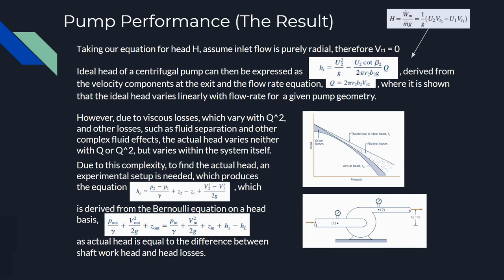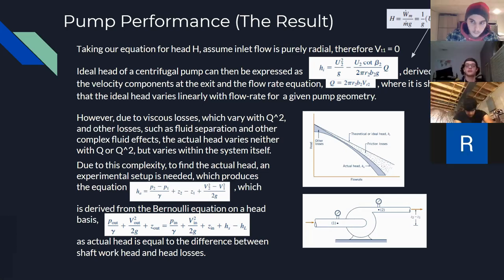As there is work done by the shaft and head losses, we must sum those with the initial fluid properties to accurately find the exit conditions. With the experimental setup, we already know the inlet and outlet conditions, so we can solve for actual head loss easily.